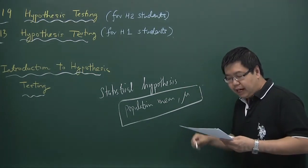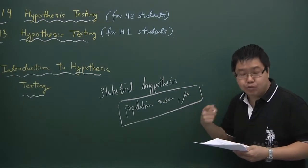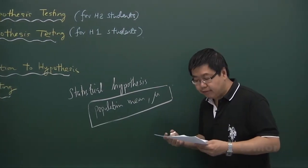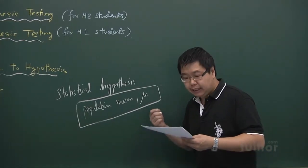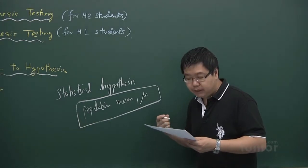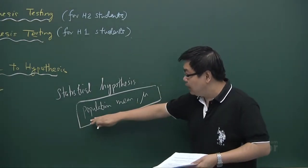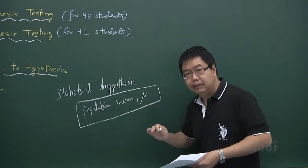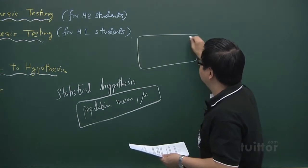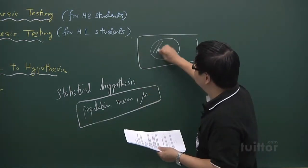The hypothesis that a person makes can be true or false. We usually test its validity using sample data collected from the population. When we want to determine whether a statistical hypothesis is true or false, we will take a sample from the population and study that sample.